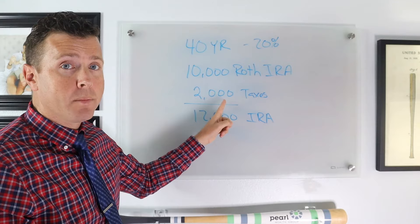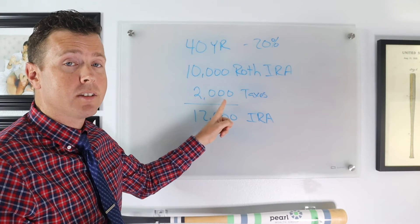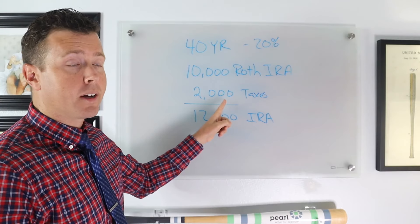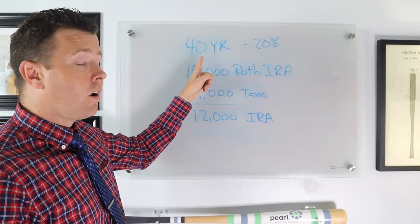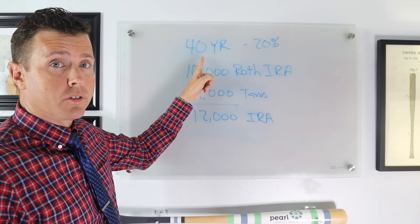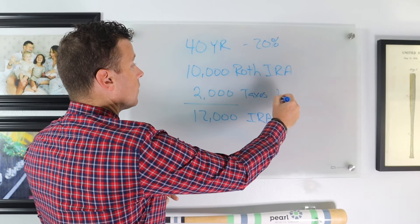So all that hard earned IRA money that you've been contributing and investing and growing, you just took that off the table and sent it to the IRS. Well, he's also under the age of 40, or he's under the age of 59 and a half. He's 40 years old. So when he took this money out of his IRA, he had to pay a 10% penalty.